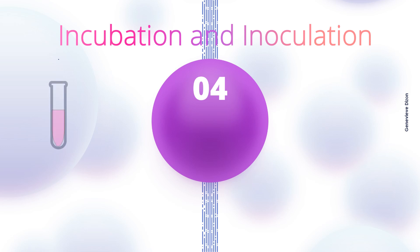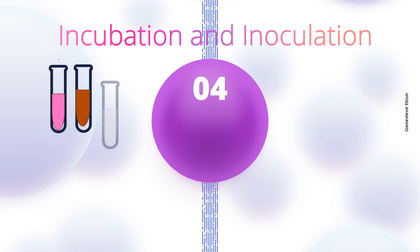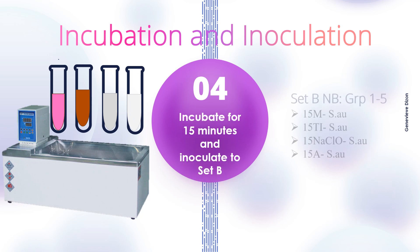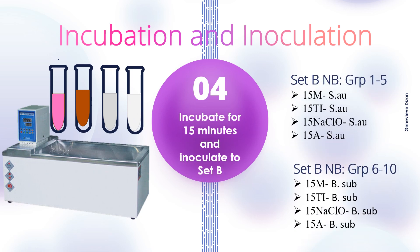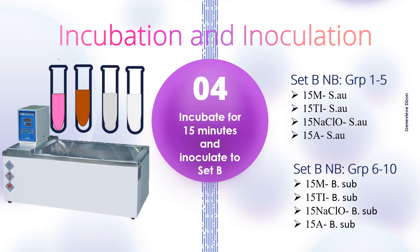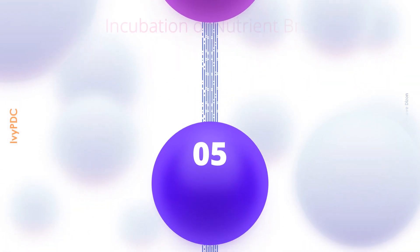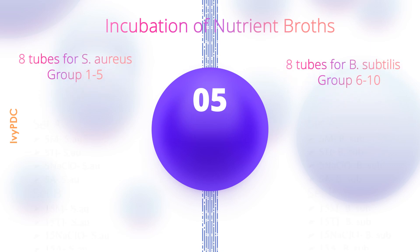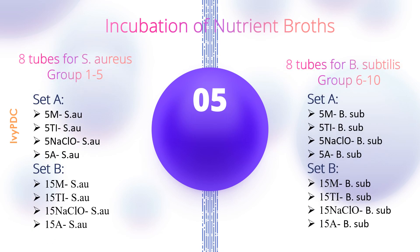The fourth step is the continuation of incubation and inoculation. The chemical tubes remain inside the water bath, and we wait for the second timer to alarm at 15 minutes. When it alarms, transfer a loopful of the chemical into the nutrient broths labeled as Set B. After 15 minutes, each group should have inoculated eight nutrient broths from the different types of chemicals with organisms.